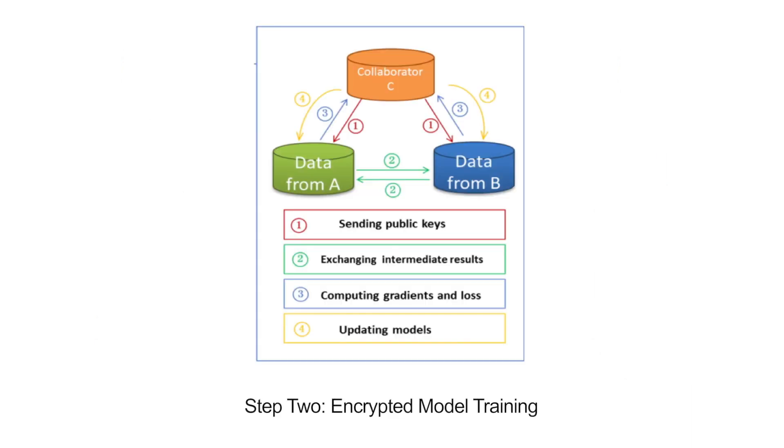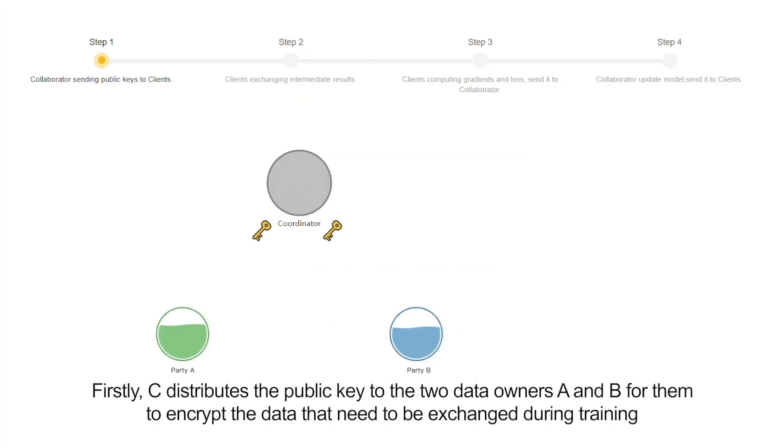Step 2: Encrypted model training. To ensure data confidentiality during training, a trusted third party, the collaborator C, is established for encrypted model training. It can be further divided into four steps. Firstly, C distributes the public key to the two data owners, A and B, for them to encrypt the data that need to be exchanged during training.